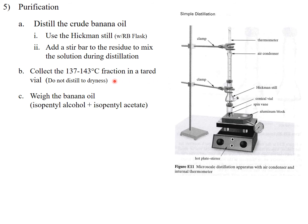We're going to collect the fraction that distills at 137 to 143°C. We've added a thermometer just below the condensation point to measure the temperature as vapors move up the still. One thing to make sure we don't do is distill to dryness—sometimes ethers form during reactions of alcohols, and ethers can be explosive, so distilling to dryness could cause a slight explosion.